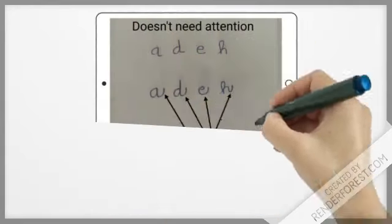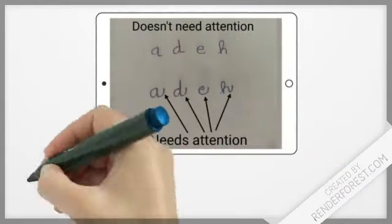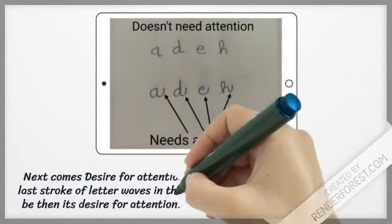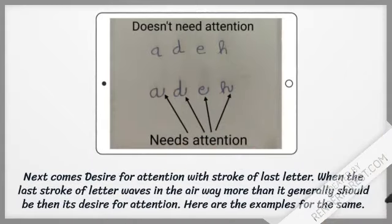Next comes desire for attention with the stroke of the last letter. When the last stroke of a letter waves in the airway more than it generally should be, then it's desire for attention. Here are the examples for the same.